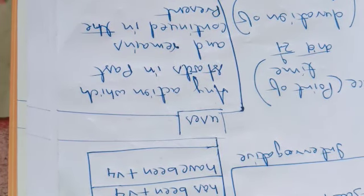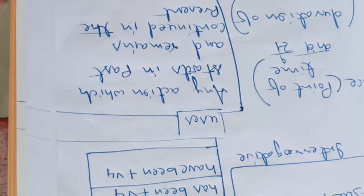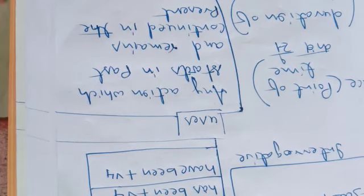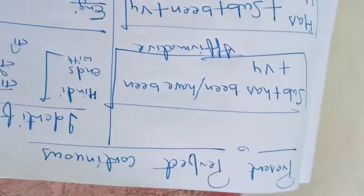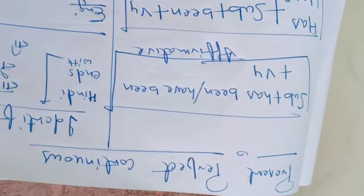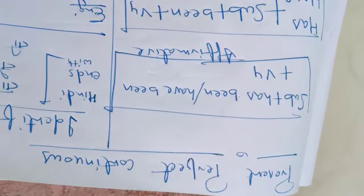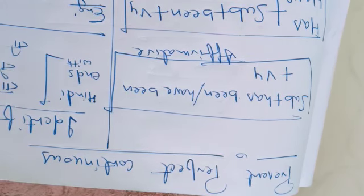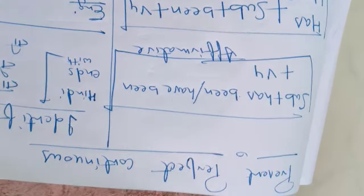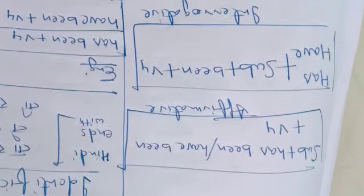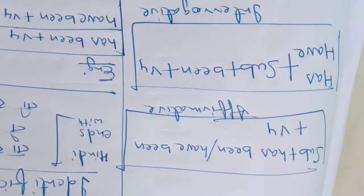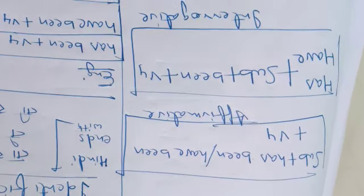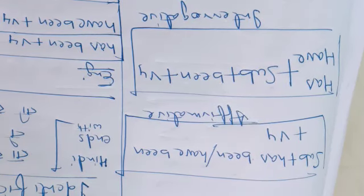So any action that started in the past and shows its continuity in the present — wherever such a relationship is established, we use present perfect continuous tense. The structure is: for affirmative — Subject + has been/have been + V4; for interrogative — has/have + Subject + been + V4.